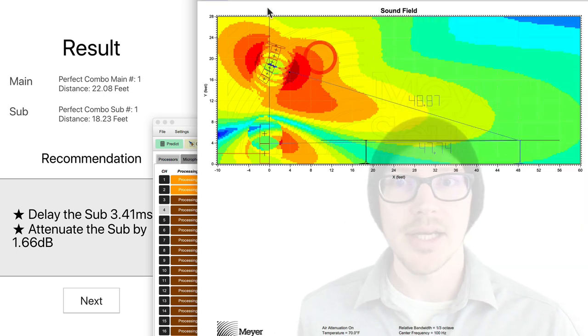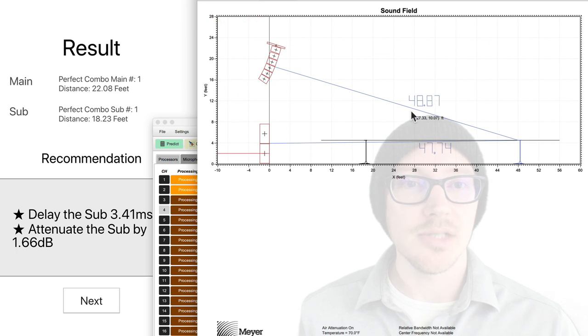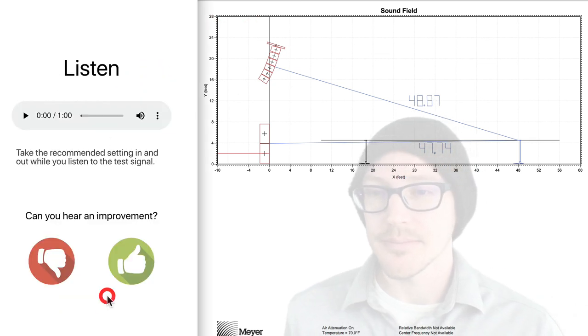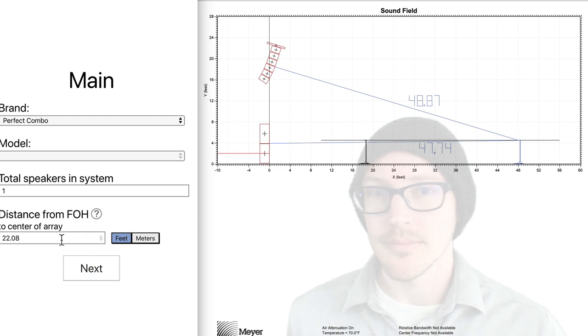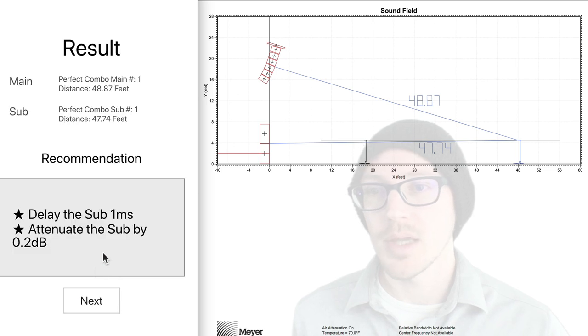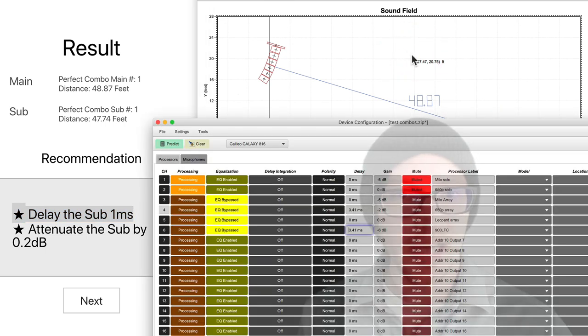So I've got my fourth mic here, and I've already done these measurements. So let's redo our calculation. 48.87 and 47.74. So I need to delay the sub by one millisecond because I'm only off by about one foot here.